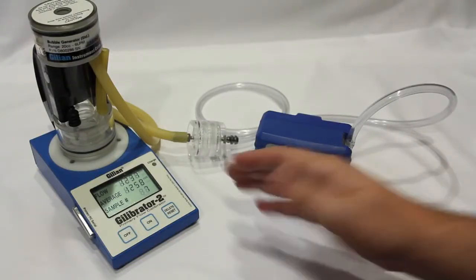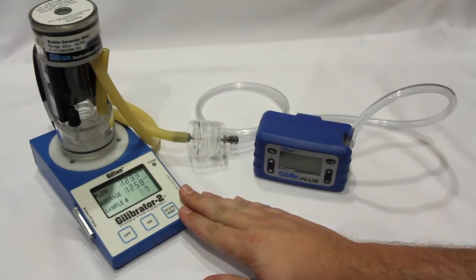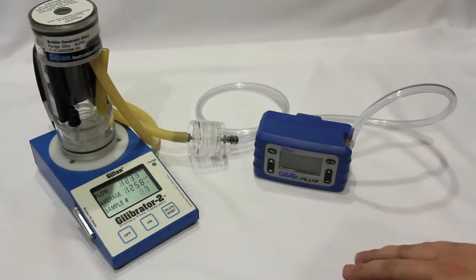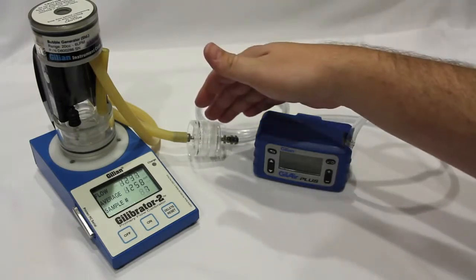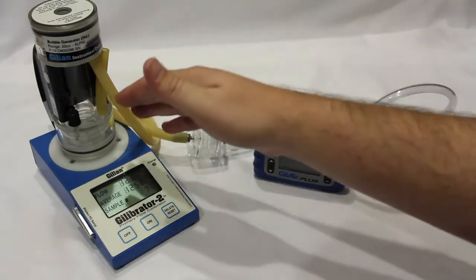To begin calibrating, set up the air flow calibrator per the manufacturer's instructions. Ensure that your sampling media is in line between the air sampling pump and the calibrator.